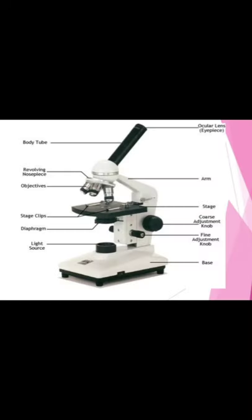The next part is the revolving nosepiece, which holds two or more objective lenses and can be rotated to change power. Another part of the compound microscope is the objective lens — the lens or system of lenses in a microscope that is nearest the object being viewed.